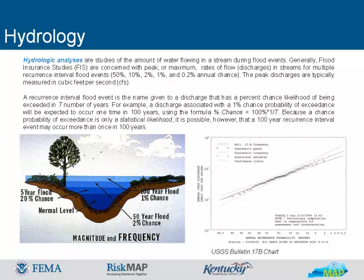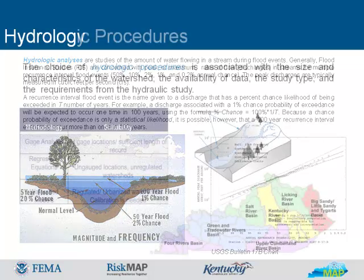For example, a discharge with a 1% chance probability of exceedance will be expected to occur one time in 100 years. Because a chance probability of exceedance is only a statistical likelihood, it is possible, however, that a 100-year recurrence interval event may occur more than once in 100 years.